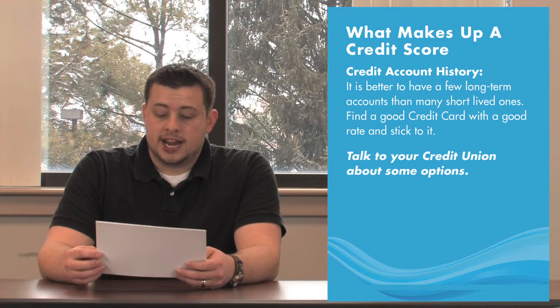The amount of your outstanding debt also goes into the score. Going above 50% of your credit limit will reduce your score. It's best to stay below 30%. Your credit account history is also a factor. It is better to have a few long-term accounts than many short-lived ones.